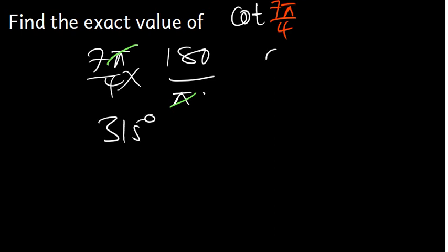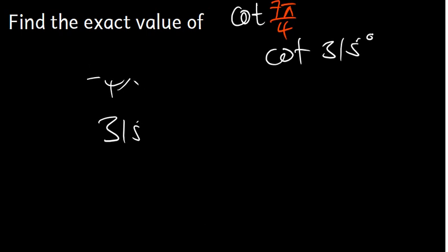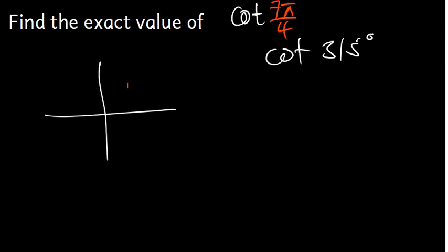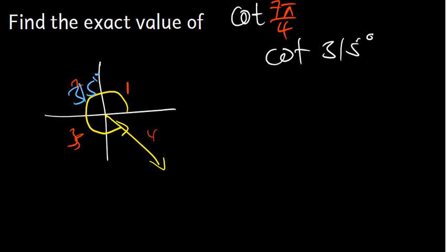So we have 315 degrees. Now we need to find the terminal angle for 315 degrees. In the x-y plane we have the first, second, third, and fourth quadrants. We can find 315 in the fourth quadrant — so from the origin all the way around to there, that is our 315 degrees.